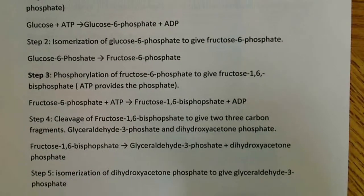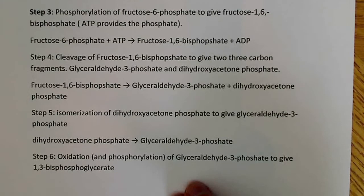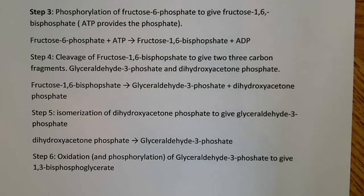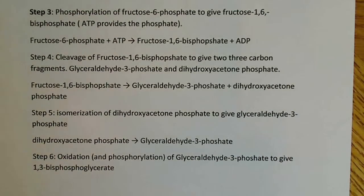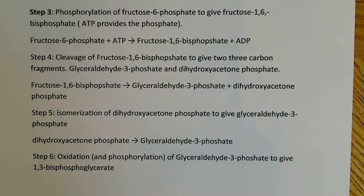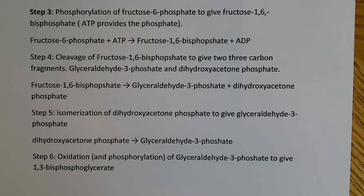Step three is a regulated step — the phosphorylation of fructose-6-phosphate to give fructose-1,6-bisphosphate. ATP again provides the phosphate group. Fructose-1,6-bisphosphate is the committed molecule of glycolysis, the first unique product. Once it's made, it has to go through the rest of the reactions of glycolysis. All the other intermediates prior to that point could be drawn off and used in different pathways — glucose-6-phosphate and fructose-6-phosphate can be used elsewhere — but not fructose-1,6-bisphosphate.